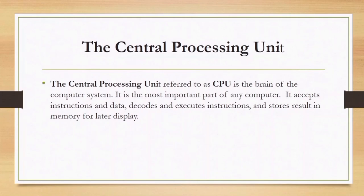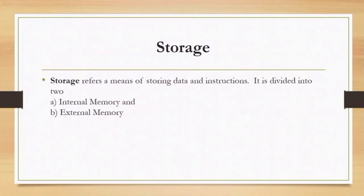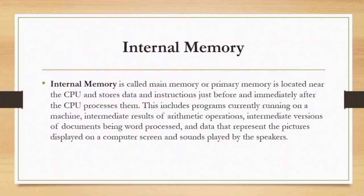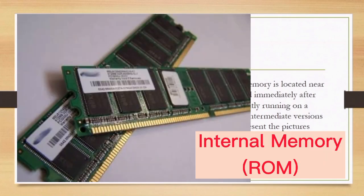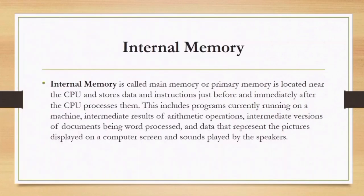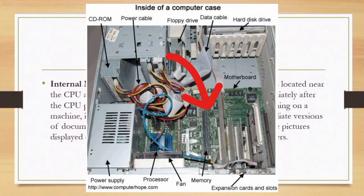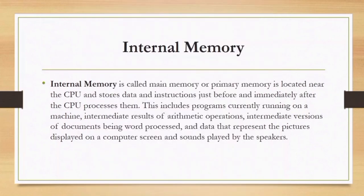Storage is the means of storing data and instructions. It is divided into two: internal memory and external memory. Internal memory is called main memory or primary memory. It is located near the CPU and stores data and instructions just before and immediately after the CPU processes them. It includes programs currently running on a machine, intermediate results of arithmetic operations, immediate versions of documents being processed, and data representing pictures displayed on the computer screen.